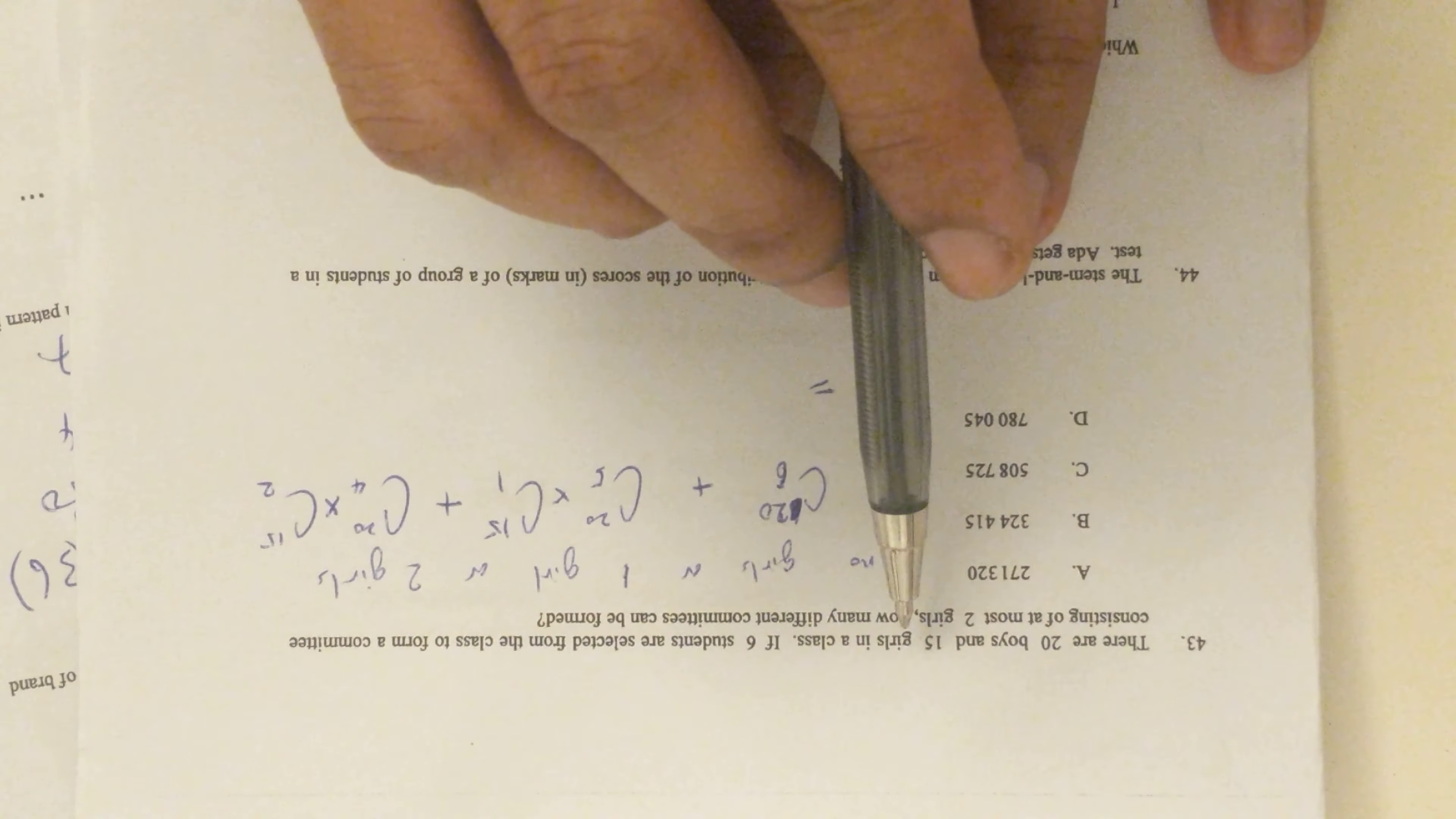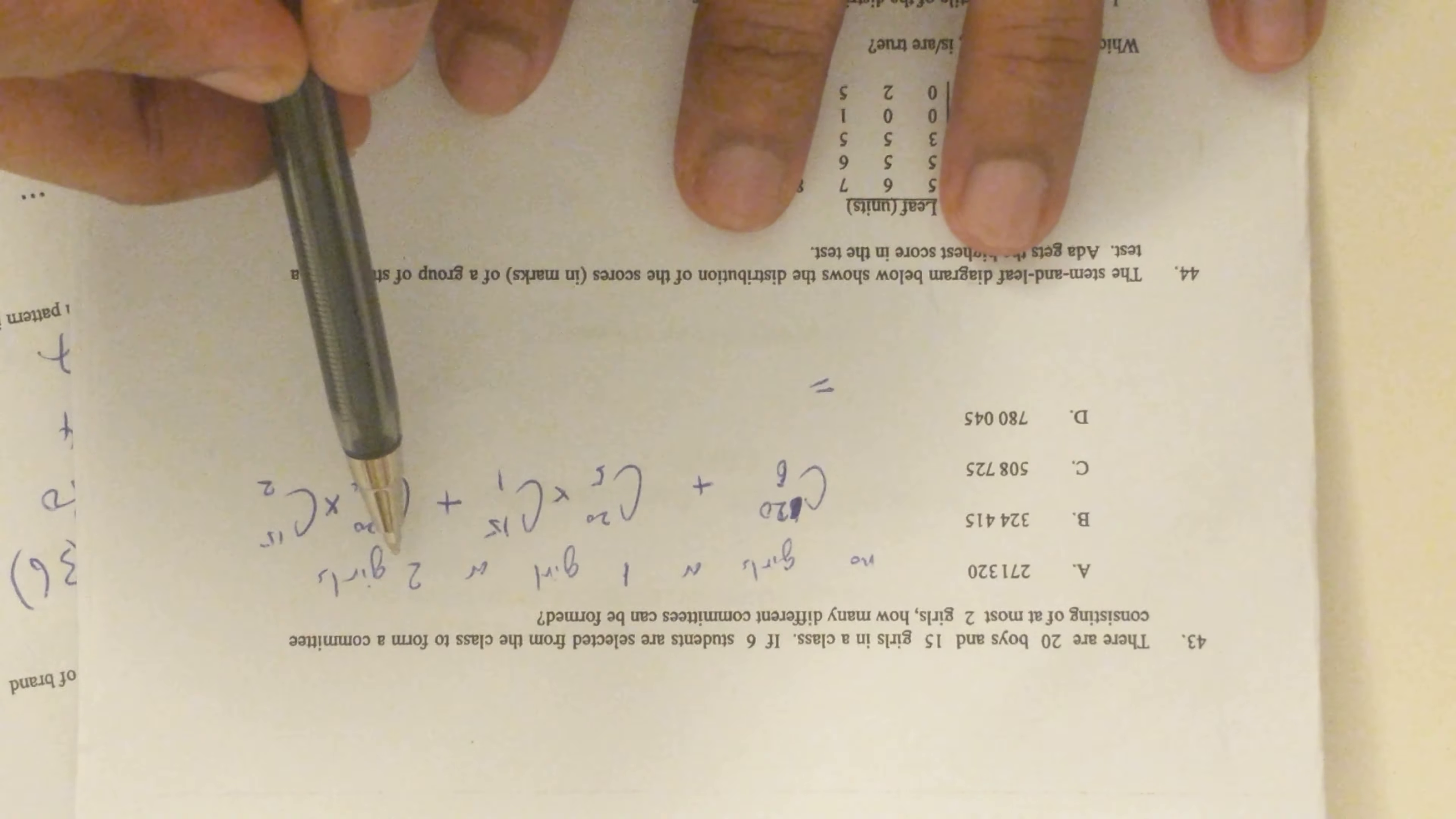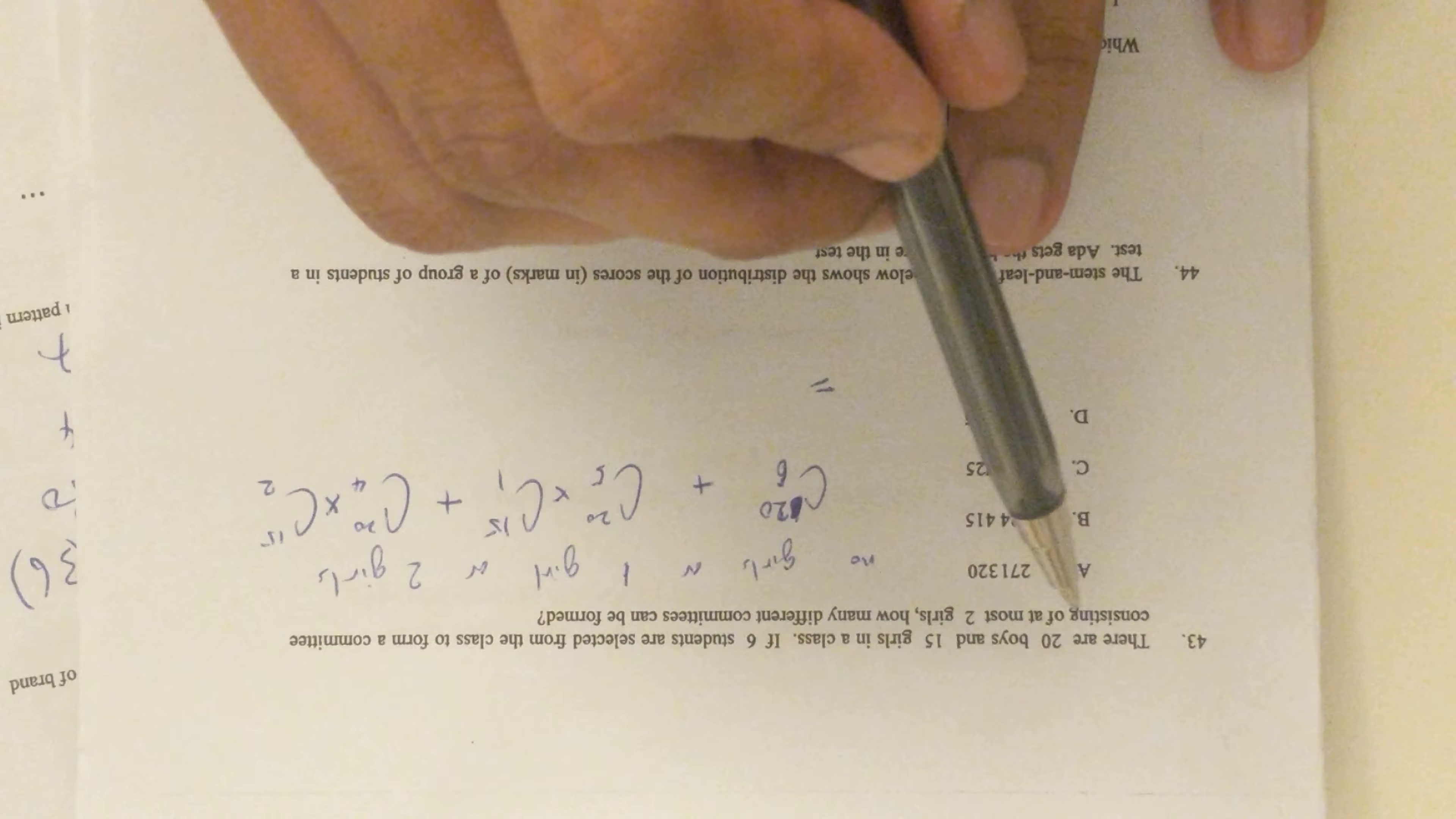At most they can be two, so we have two girls or one girl or no girl. If there's no girls, means all of them are boys, so we will choose any six out of the 20, so it's 20C6.